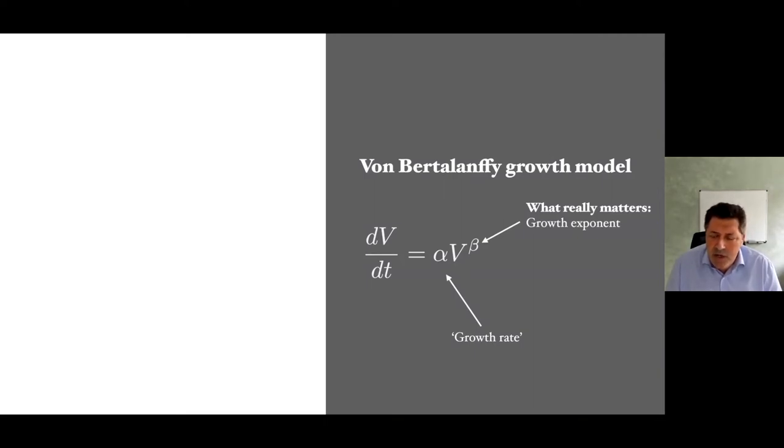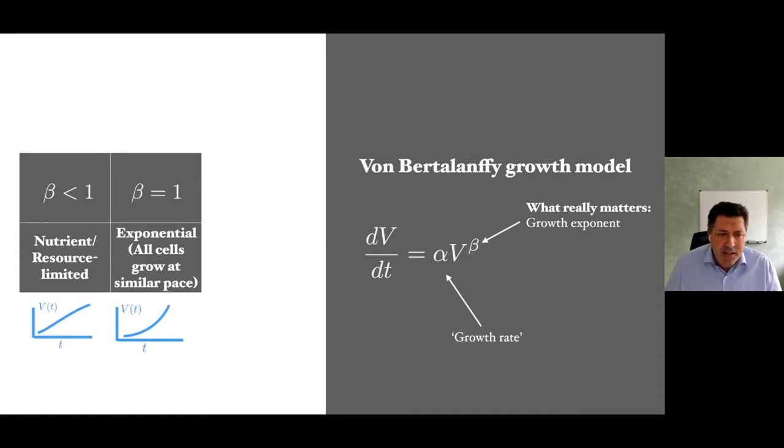It has only two parameters, very simple. You have alpha, that's kind of a growth rate, and beta, the growth exponent, which is what really matters. You have a system described by von Bertalanffy growth law. With nutrient or resource-limited growth, you get exponents beta typically smaller than 1. With good supply of nutrients where all cells can proliferate, you get exponential law, beta equal to 1.